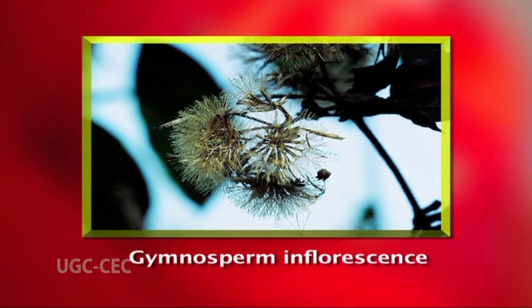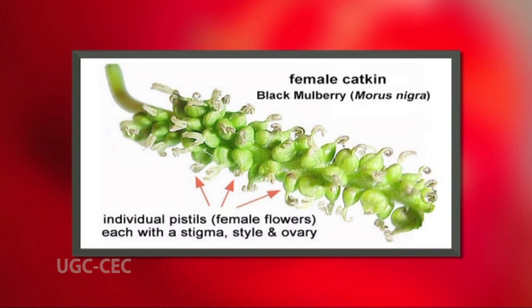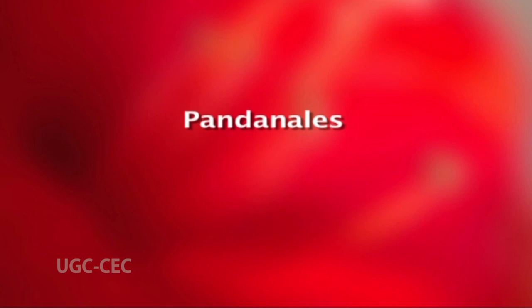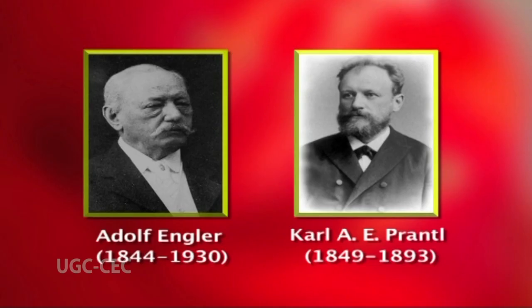In this system, the flowering plants were supposed to have originated along two independent lines from unknown wind-pollinated gymnosperms. One line led to the most primitive dicots — the Amentiferae — a group of wind-pollinated plants with small apetalous flowers and unisexual inflorescences called aments or catkins. The other line led to the most primitive monocots, the Pandanales. Thus they proposed a polyphyletic origin of angiosperms.